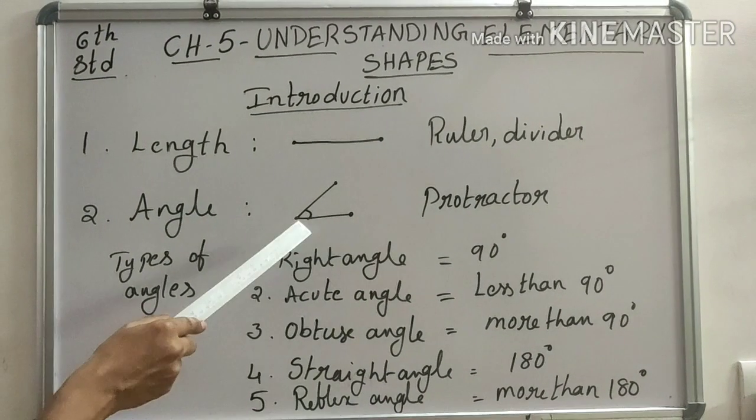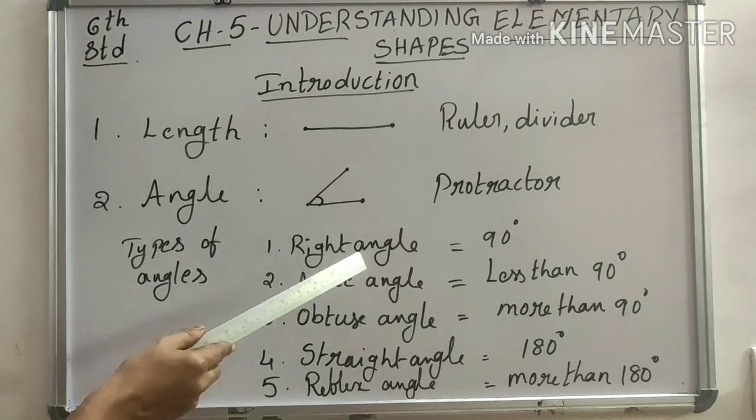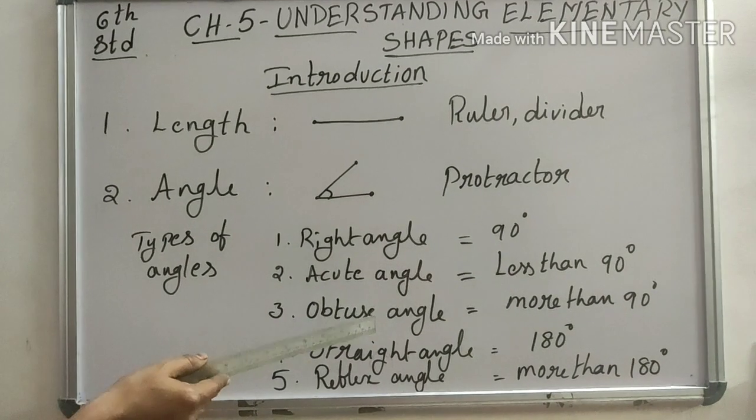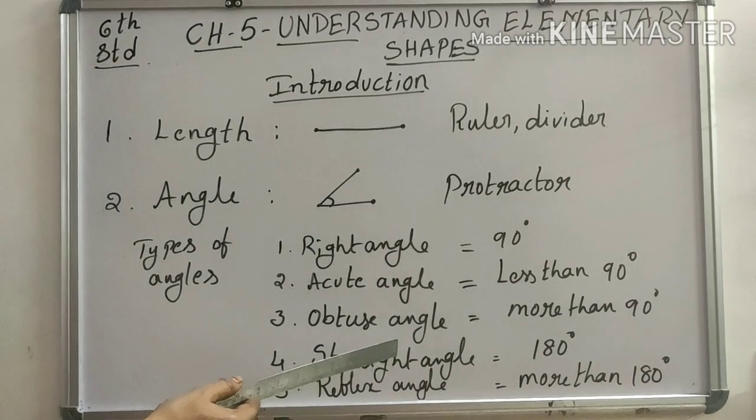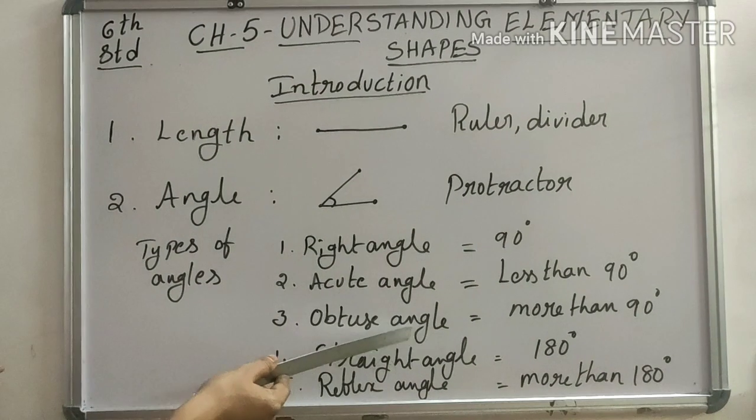Next, obtuse angle. The angle between the two lines is more than 90 degrees, then we say that is obtuse angle. 90 degrees se jyada hona chahiye and below 180 hona chahiye, that is 120, 100, 150. Is tarah hoga to usko obtuse angle kahenge.